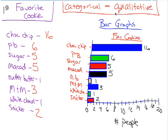Now, you're going to have to be familiar with creating a bar graph, a pictograph, a circle graph — which we also call a pie chart — and a line graph.